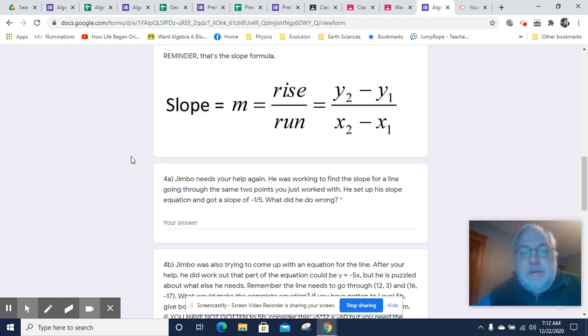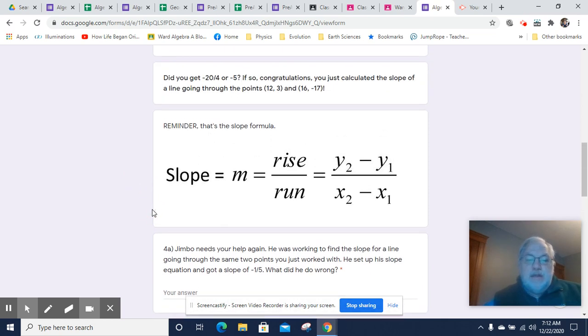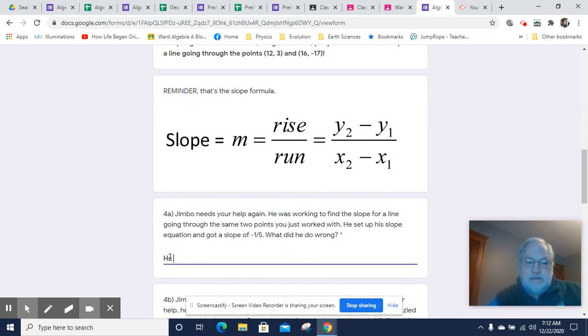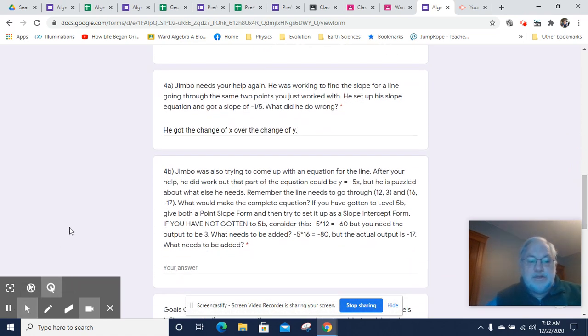Now Jimbo, remember Jimbo? Jimbo needs your help again. He was working out the slope, and he ended up coming up with negative 1 fifth. Well, negative 1 fifth is the reciprocal of negative 5, so you can pretty quickly tell that he got the change of x over the change of y, and he just flipped the slope. He got change of input divided by change of output, which would be like saying your speed was in hours per mile. So we don't typically do that. It's not necessarily mathematically illegitimate, but it's something we don't do for slope. It is not the definition of slope. Slope is going to be output change over input change.